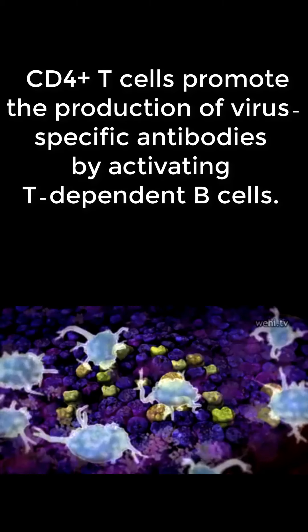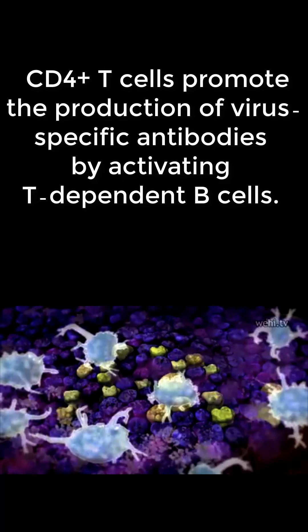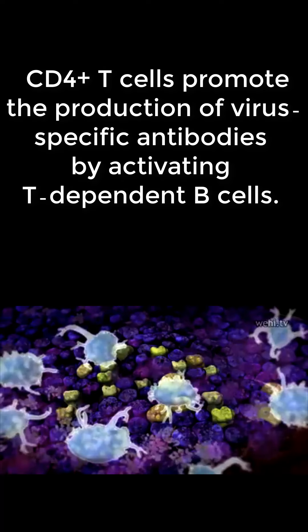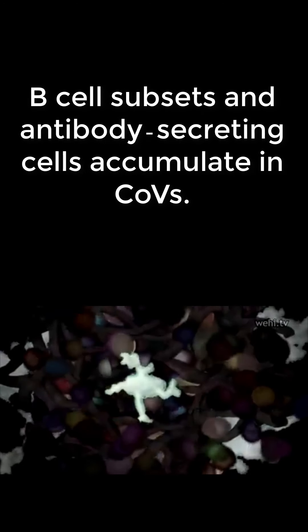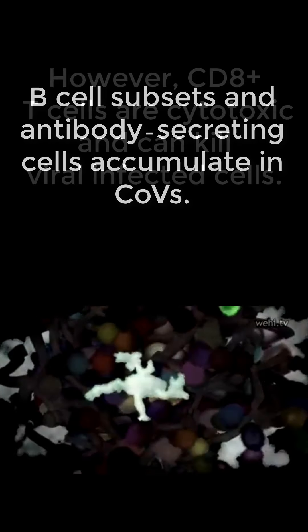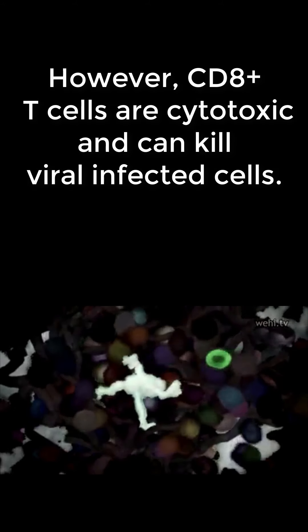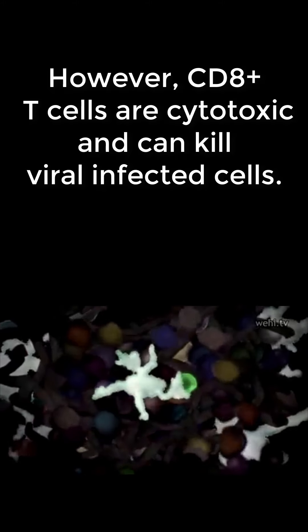Antigen-presenting cells are one of the first cells to detect infections in our bodies. Their role is surveillance, inspecting their environment and taking samples back to nearby lymph nodes. Once in the lymph node, the antigen-presenting cells search for a T-cell that will recognize their cargo. By chance, this T-cell recognizes the cargo carried by this antigen-presenting cell.